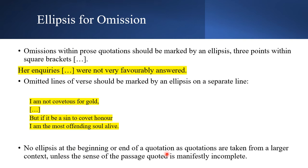An important rule: do not use ellipses at the beginning or end of a quotation. Quotations are understood to be taken from a larger context, unless the sense of the passage quoted is genuinely incomplete. So if your quote sits somewhere within a source text with sentences before and after it, you do not need ellipses at the start or end. Ellipses are only needed where you are omitting words in the middle of the quoted passage.